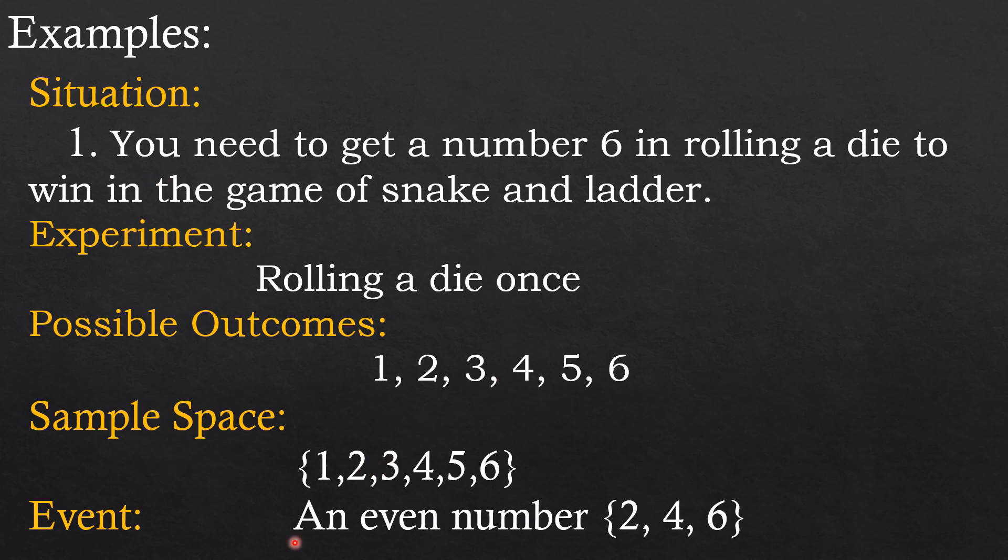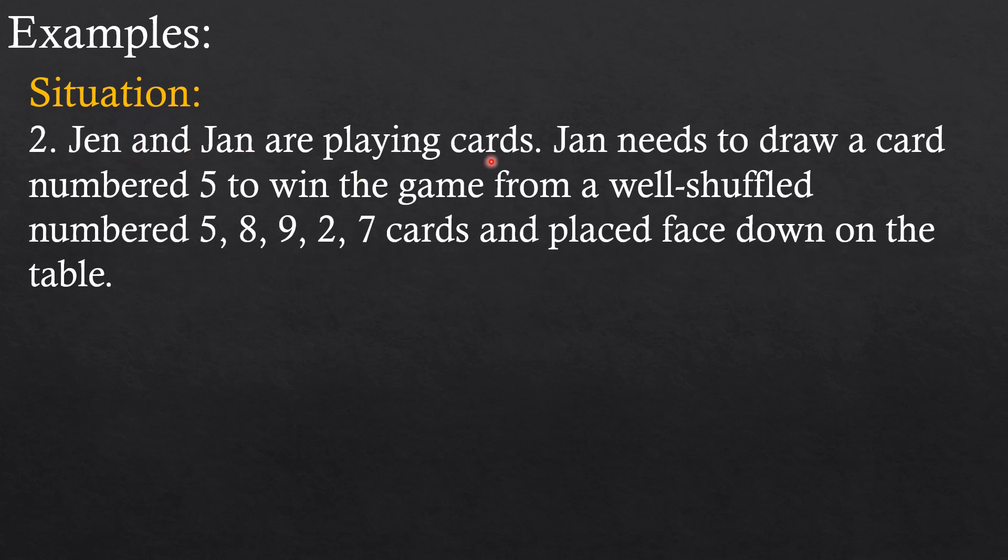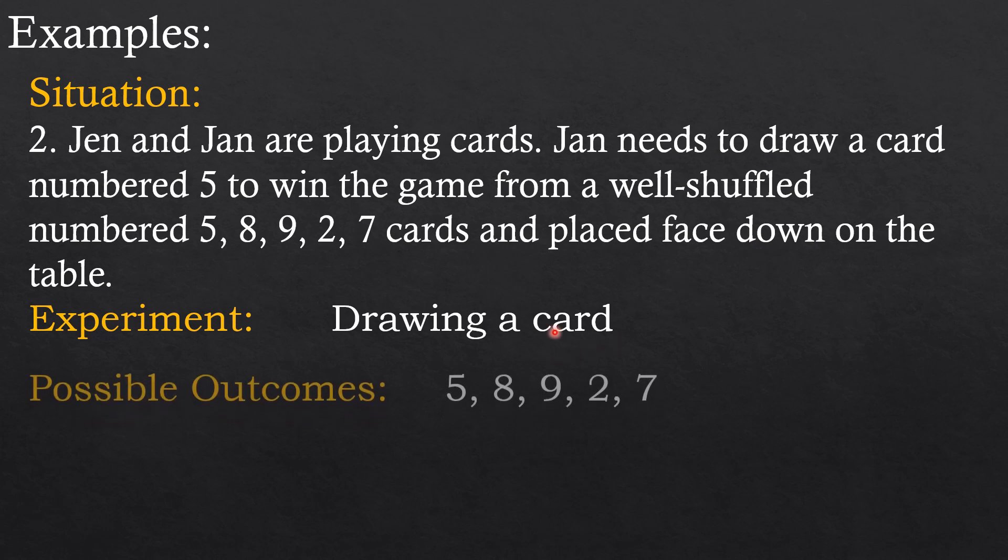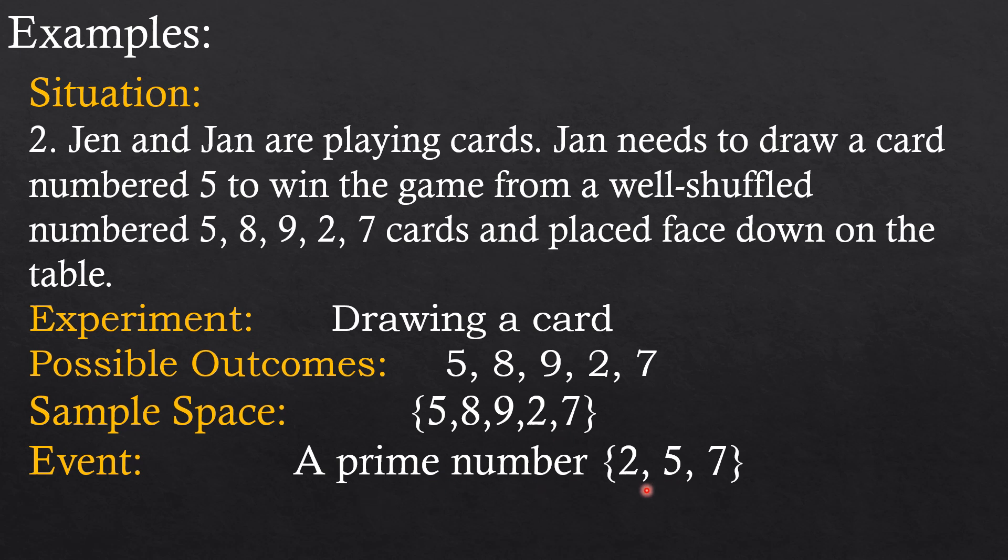Example number two: Jan and Jan are playing cards. Jan needs to draw a card number five to win the game from a well-shuffled number five, eight, nine, two, seven cards placed face down on the table. Our experiment here is drawing a card. Possible outcomes would be five, eight, nine, two, and seven. The sample space are all the possible outcomes. The event is a prime number: two, five, and seven.